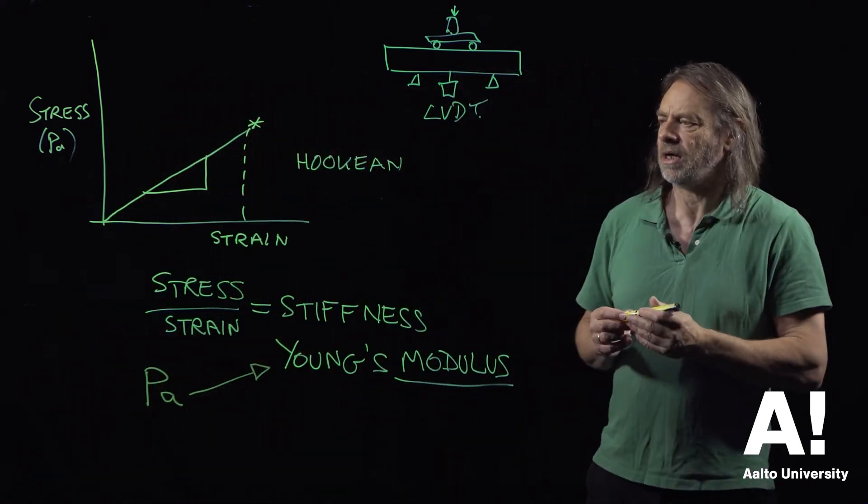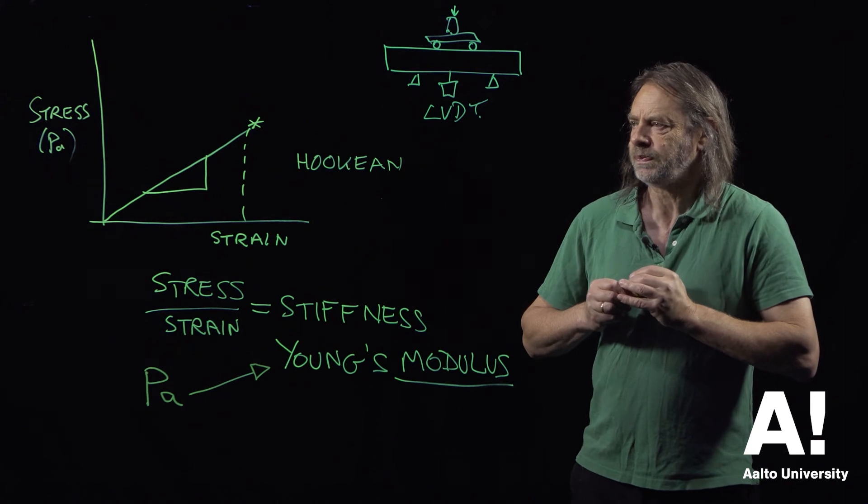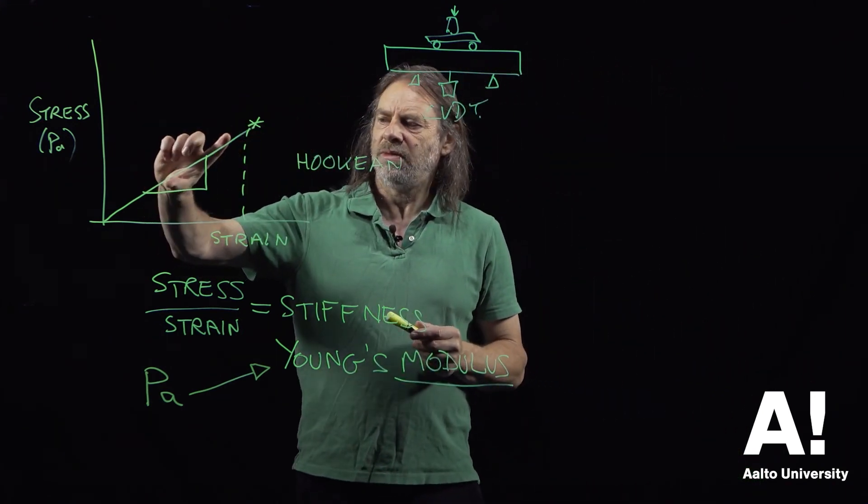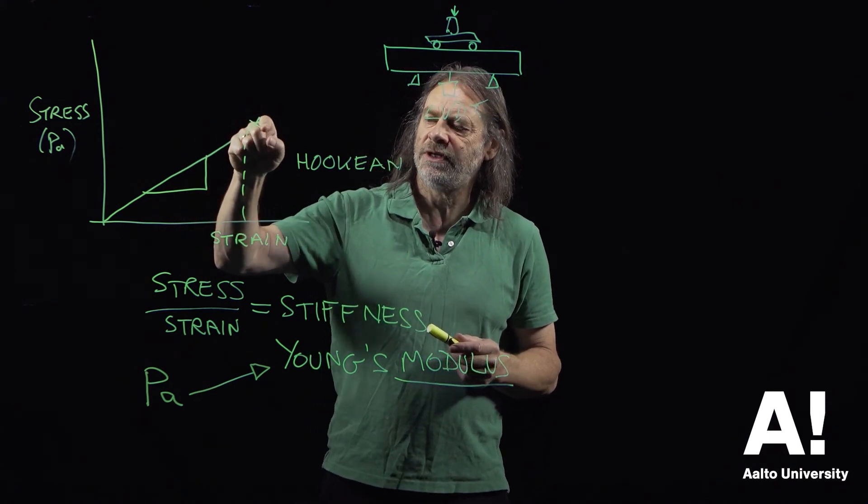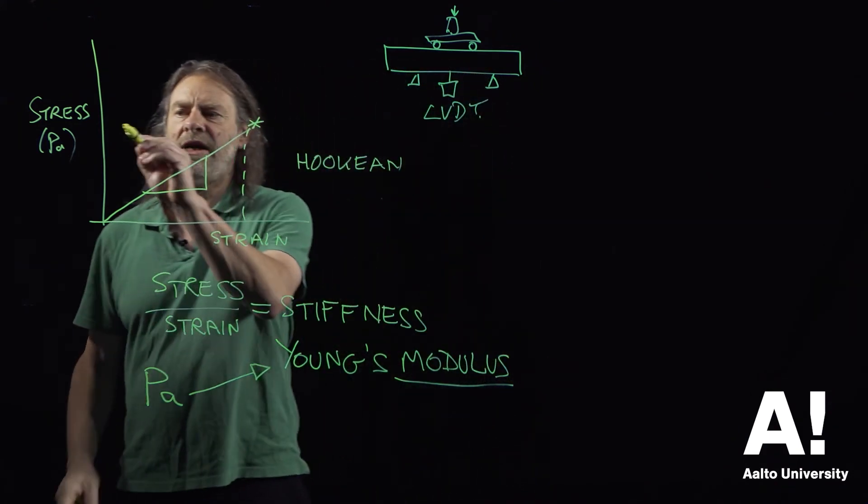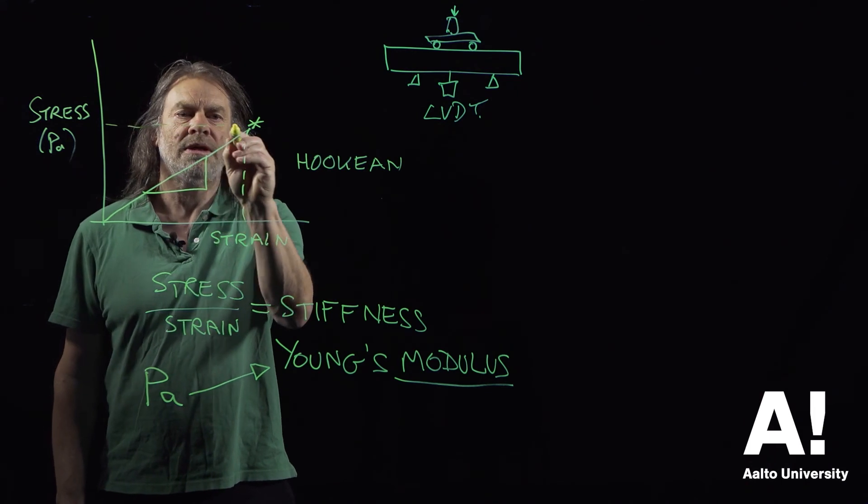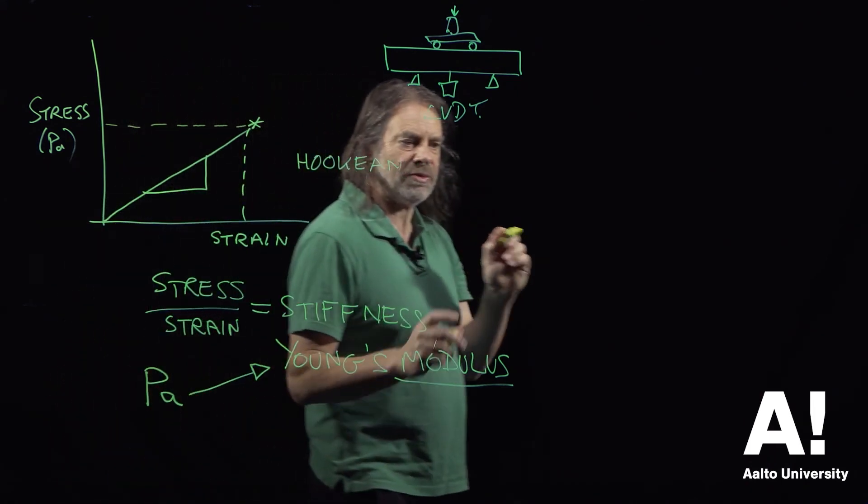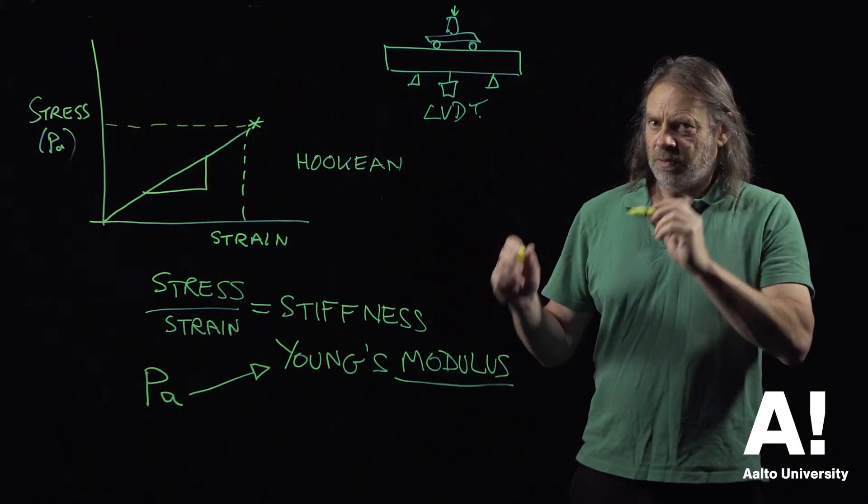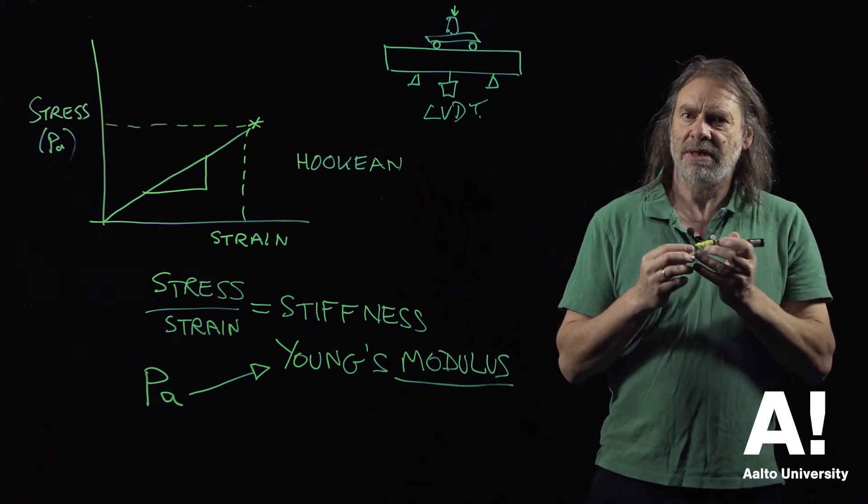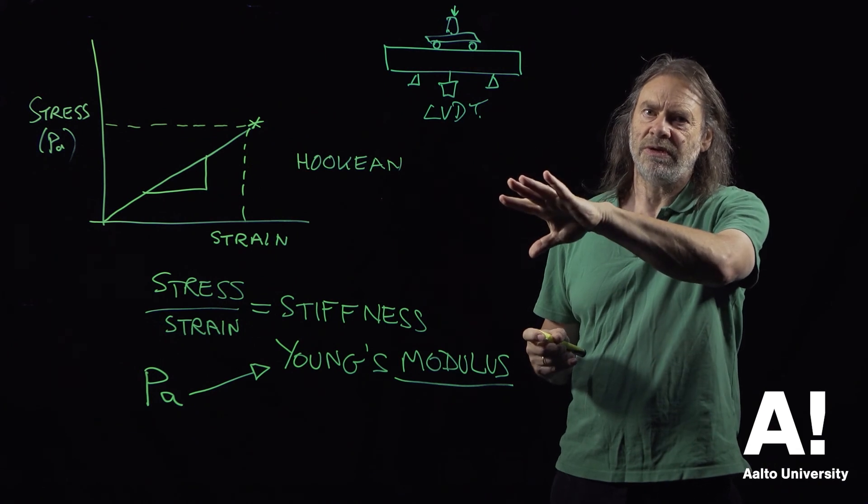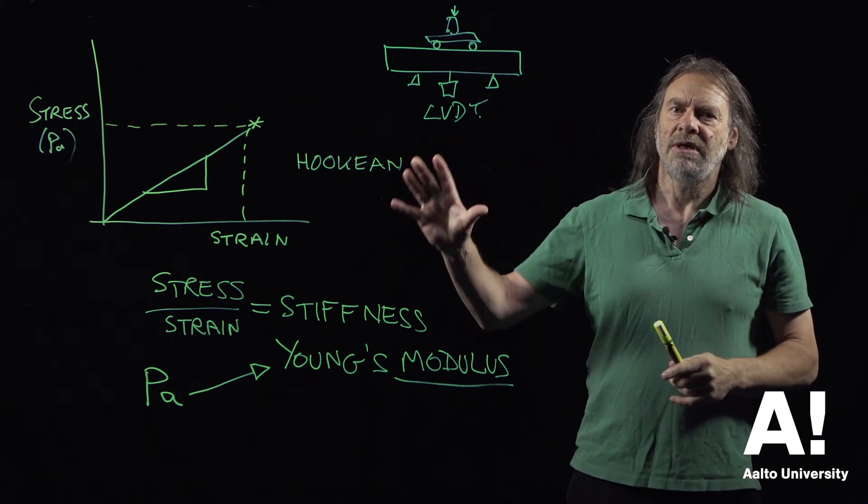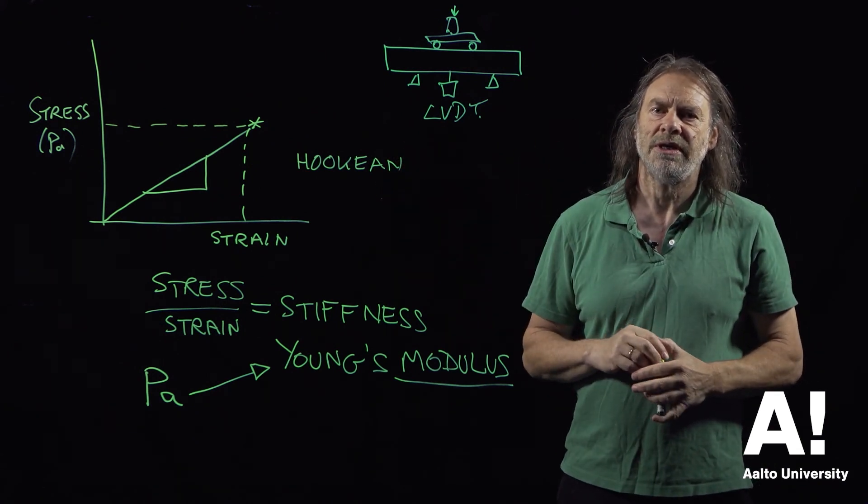We're hoping that we can measure the stiffness of this material, and there will be a relationship between the stiffness and the failure stress. That's the assumption we're making for producing a diagram that will tell us that the indicative property of the stiffness of the material is related to the strength, and this is what we need to do for machine grading.